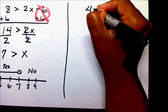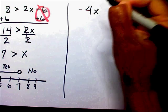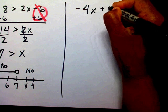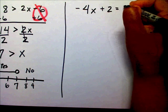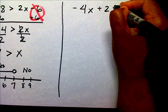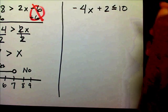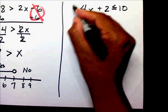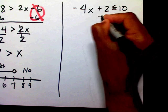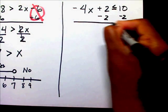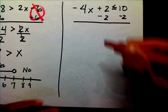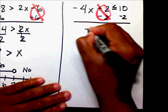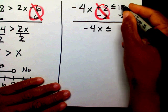Let's make it negative 4x. Negative 4x plus 2 is less than or equal to 10. I'm going to leave my x term alone and get rid of this plus 2 first. Let's subtract 2 on both sides. Your 2's cancel out, so you're left with negative 4x is less than or equal to 8.